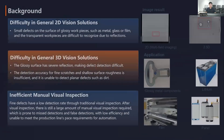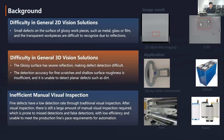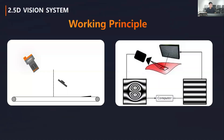The first question is: why do we use 2.5D? It comes from some pain points in vision detection. The effect on the surface of glossy workpieces — such as metal, glass, or film — and transparent workpieces are difficult to recognize due to reflections. In 3D vision solutions, glossy surfaces also cause severe reflection under laser profiling, making detection very difficult. The detection accuracy for fine scratches and shallow surface roughness is also insufficient in 3D vision solutions, and it is unable to detect planar defects such as dirt. Normally the solution is manual visual inspection, but it cannot meet efficiency requirements. That is why we need a 2.5 dimension system.